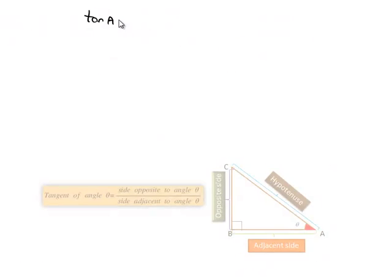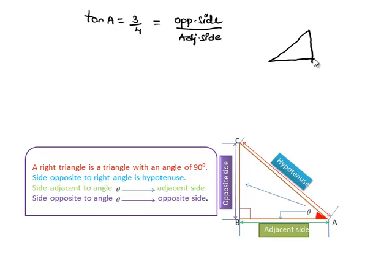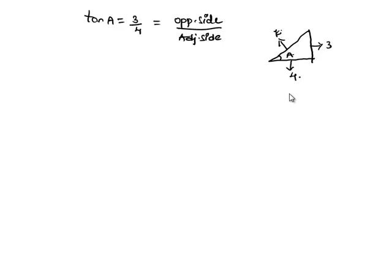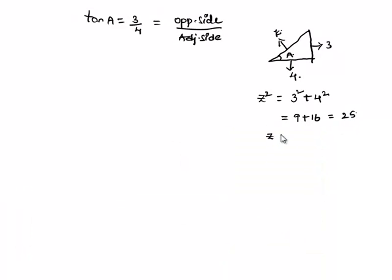If tan a is equal to 3 by 4, that is nothing but opposite side by adjacent side. Let us consider a right angle triangle with base angle a, where the opposite side is 3 and the adjacent side is 4. In order to find sin a and cos a, we need to find the hypotenuse, let it be z. From Pythagoras theorem, z square equals 3 square plus 4 square, which is 9 plus 16, equal to 25, and thereby z equals 5.